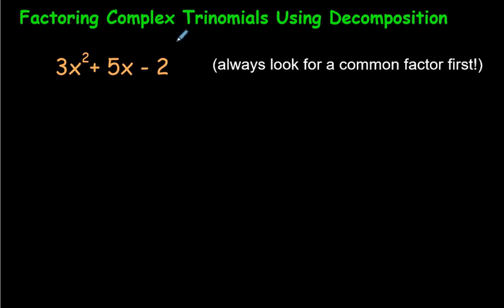What is a complex trinomial? It's just a trinomial where — in the past, I have other videos on how to factor a trinomial — in those cases, this coefficient right here would be 1, so it would just be x squared plus 5x minus 2, and then we'd factor it really quickly. In these ones, you have to deal with this coefficient here of 3.